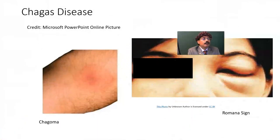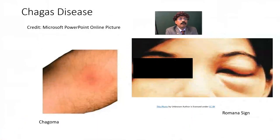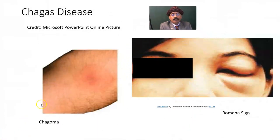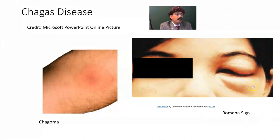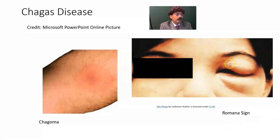Here in this image you can see the chagoma — this is the chagoma area — and this is Romaña's sign, showing orbital edema.